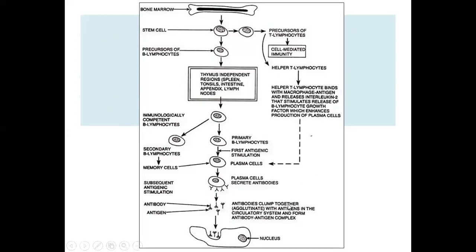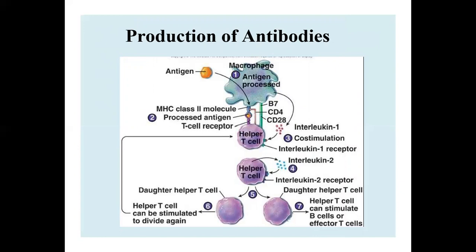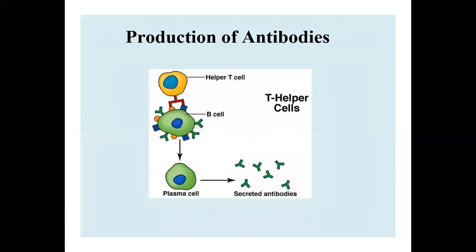These antibodies are used for the phagocytosis process, which is related to macrophages. In the antibody production process, antigens are presented by APCs and processed with MHC class 2 molecules. MHC class 2 molecules help T helper cells produce interleukins, which are recognized by helper T cells for the production of antibody-producing cells known as B cells or plasma cells, which secrete antibodies.